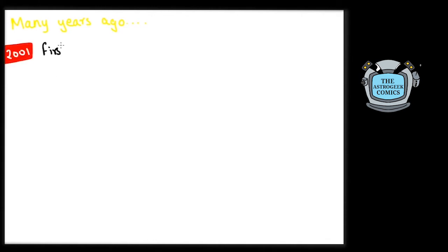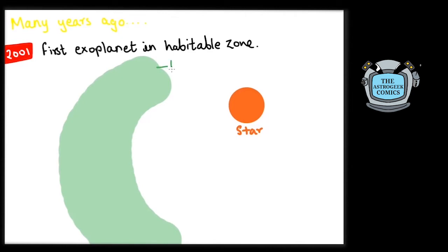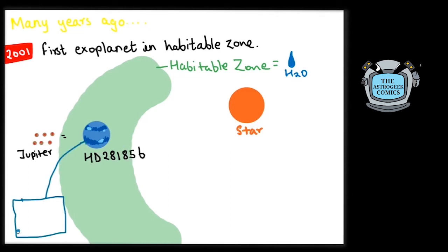In 2001, we took a big leap ahead when we found the first planet in the habitable zone of the star. HD 28185 b is a gas giant six times bigger than Jupiter at the same distance from its star as Earth. Though the planet is not rocky or has any surface, doesn't exactly make it suitable for life.